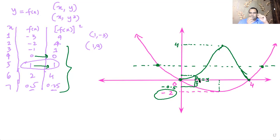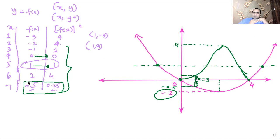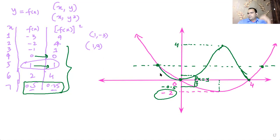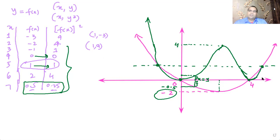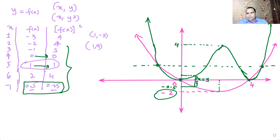When the function is between -1 and 1, the squared y values are lower than the actual function values. On that side, if the original y values are between -1 and 1, the squared function will be below the original graph. After y=1, the squared function will overshoot the original function. Between 0 and 1, the squared function stays below the actual values, then overshoots after that.